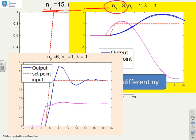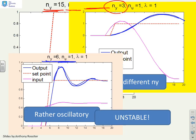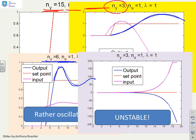Here's a different system. Would you be happy with a response like this? Most people would probably argue that this is a little bit too oscillatory and the overshoot's a little bit too big. I've used different horizons here — 6 and 1 — but it's not working. Here's another example: I've chosen horizons of 3 and 1, and in this particular case GPC has totally failed.